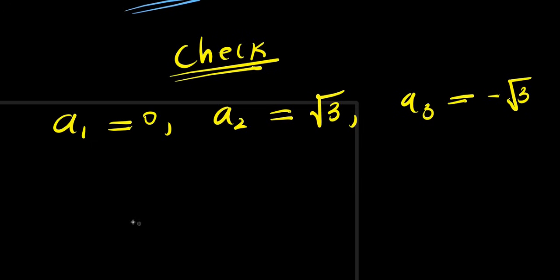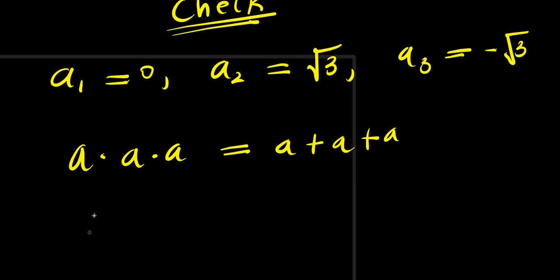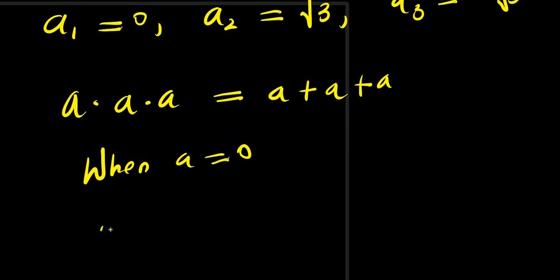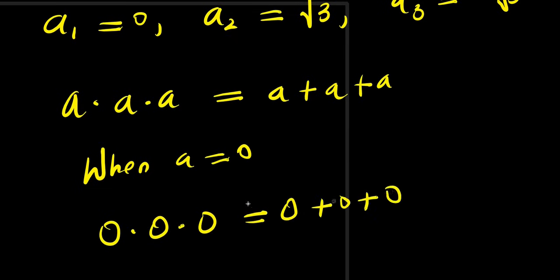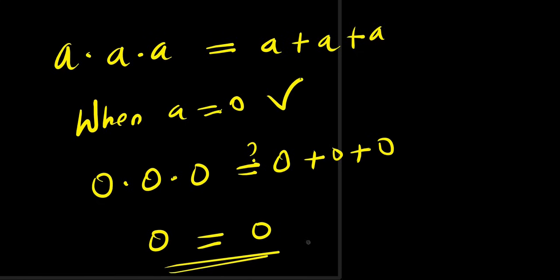Recalling the problem: a times a times a equals a plus a plus a. When a equals 0, we have 0 times 0 times 0 equals 0 plus 0 plus 0. That gives 0 equals 0, which is correct, so a₁ equals 0 is proven to be a valid solution.